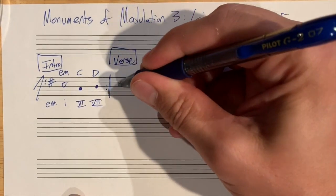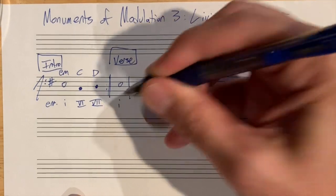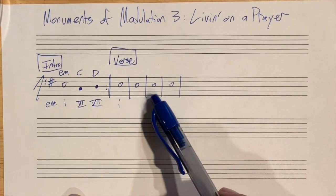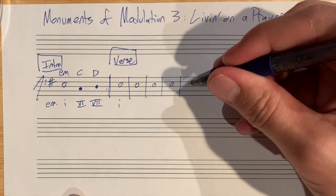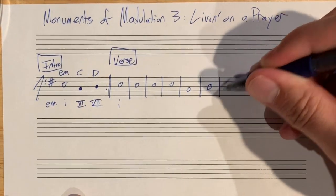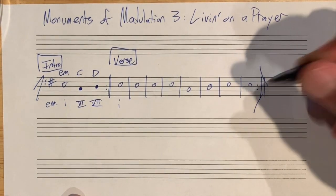Now we got the verses coming up. In the verses, we're going to have four bars of E minor, one bar of C, one bar of D, two more bars of E minor. All going to repeat.